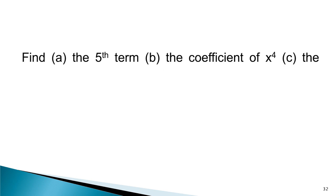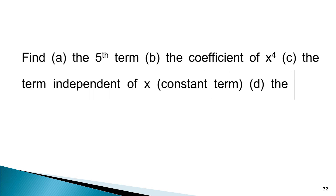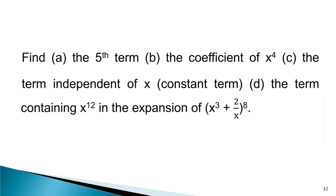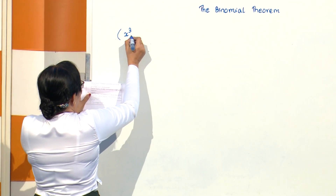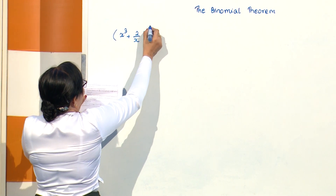Now let's find the term independent of x, and the term containing x to the power 12, in the expansion of (x² + 2/x) to the power 8.